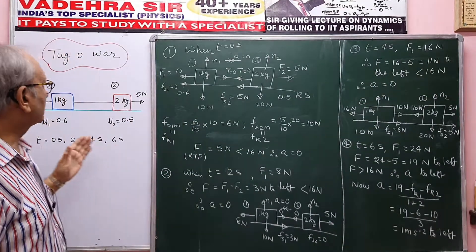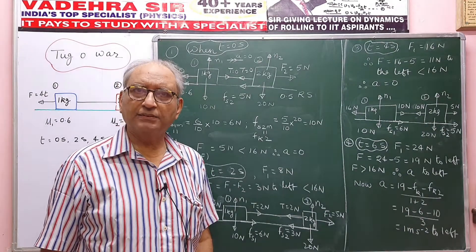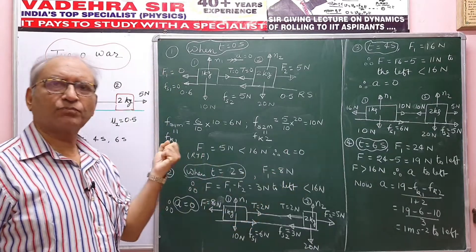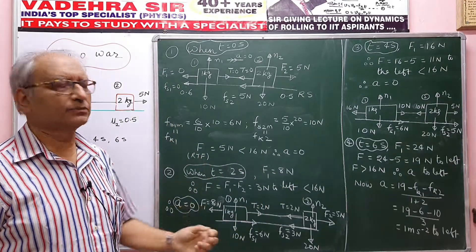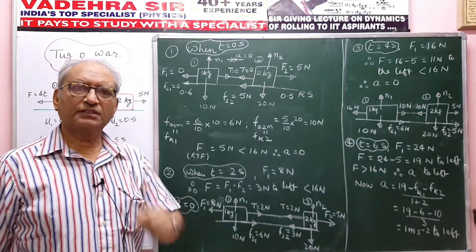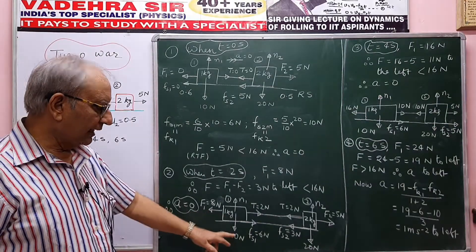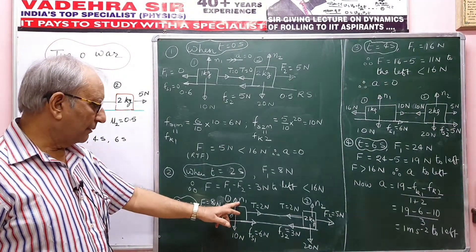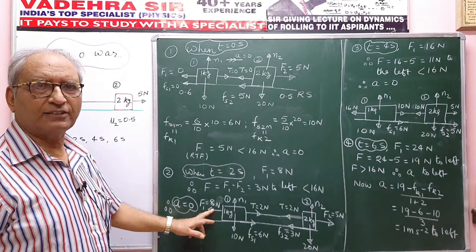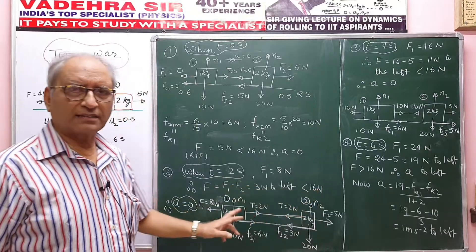Now when T is 2 seconds, F1 = 4 × 2 = 8 Newton, and F2 = 5 Newton. The resultant attracting force is 8 − 5 = 3 Newton to the left. Since 3 Newton is much less than 16 Newton, acceleration is 0, meaning static friction will act on both blocks.